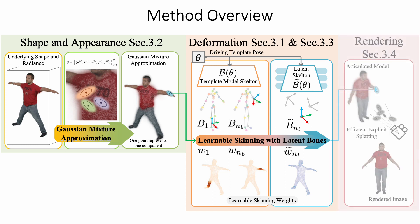Another advantage of GART is it exploits the efficiency of Gaussian splatting to approximate the volume rendering, resulting in high efficiency for both fitting and inference. Typically, GART can be fitted to People Snapshot videos in 30 seconds and can be rendered at 150 fps on a laptop. More details are in section 3.4.